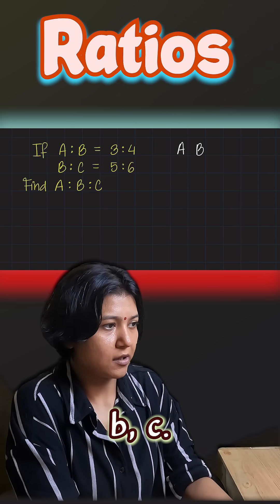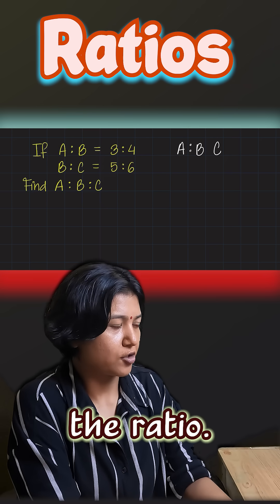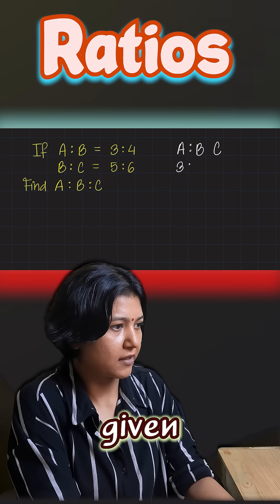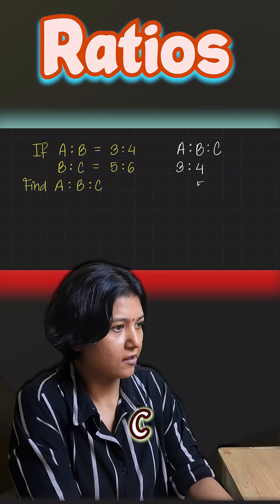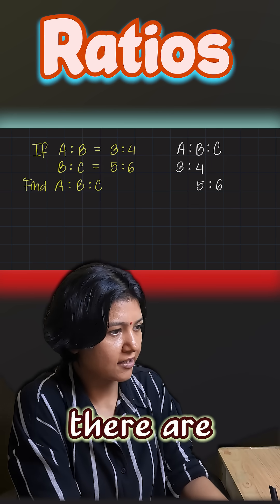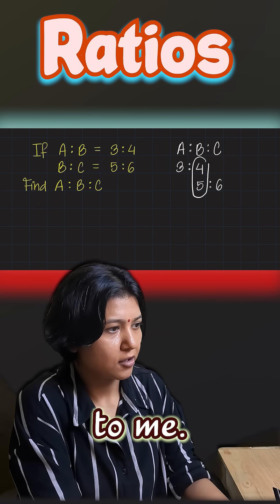We have three values a, b, c, so let's write their ratio. First of all, a is to b has been given to me as three is to four. Let's copy that. B is to c has been given to me as five is to six. So clearly there are two values for b given to me.